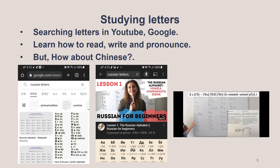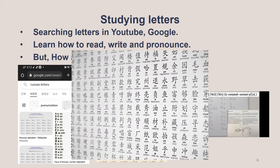After you choose your language, search the letters of it — alphabet for English, Hangul for Korean, Katakana for Japanese. Search in Google and YouTube. Study how to read letters with the right pronunciation. These are Russian letters; you can easily find them. But how about Chinese letters? I don't recommend that you first study Chinese letters when studying Chinese, because there are so many of them. Horrible.